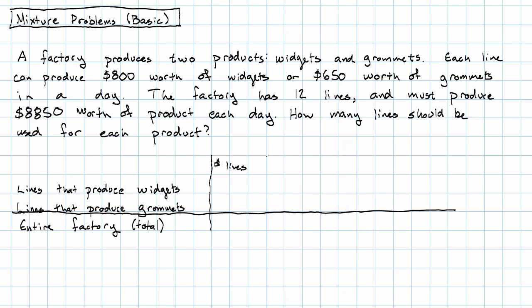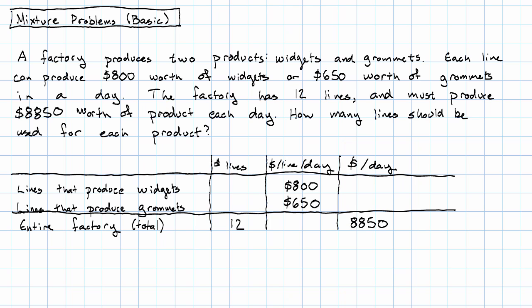Well, we have information about the number of lines. The total number of lines is 12. We have information about an amount per line per day. That's $800 for the lines that produce widgets, and $650 for the lines that produce grommets. And we also have information about just an amount per day. That's $8,850 for the entire factory.